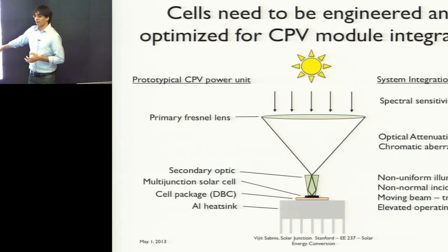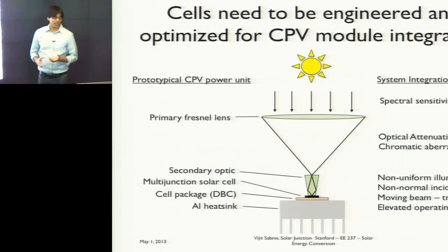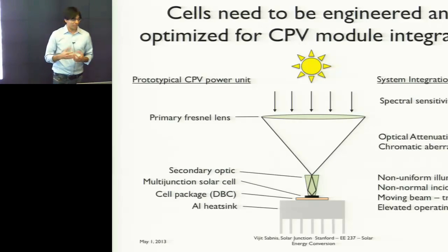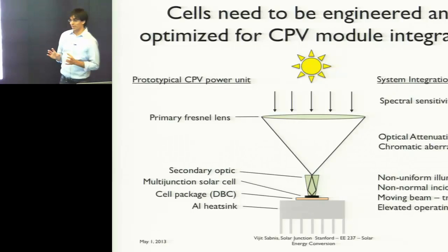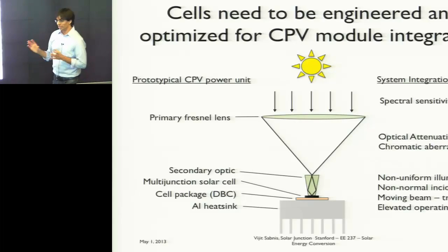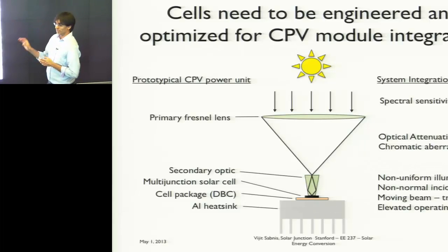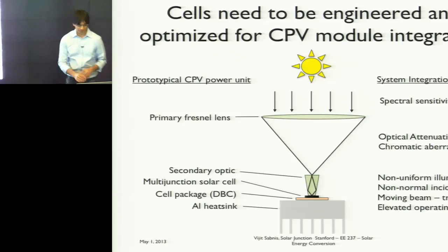These solar cells are typically operating about 40 degrees above ambient. So this is a whole bunch of issues that you have to design around in order to make these solar cells deliver the most energy yield throughout the year.